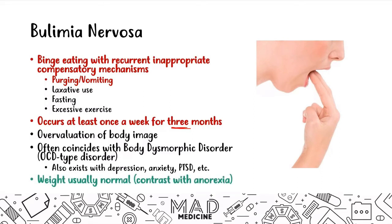Weight in bulimia is usually normal because patients are compensating for their binge eating. Unlike anorexia, where BMI is less than 18.5, in bulimia the BMI is greater than or equal to 18.5. When a patient presents with binge-purge behavior, checking the BMI will tell you whether it's anorexia or bulimia.